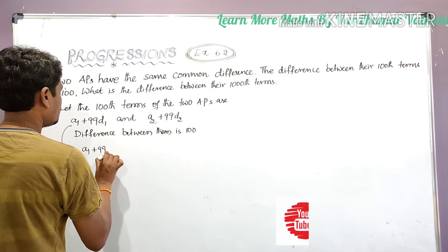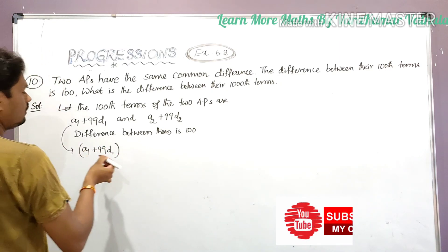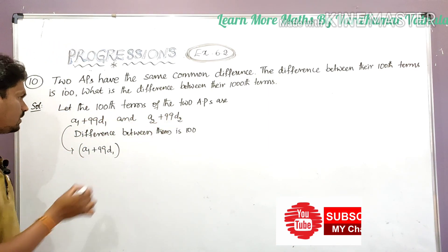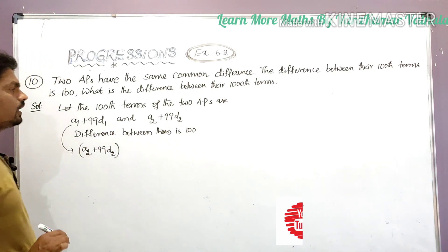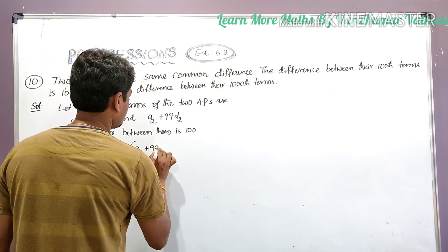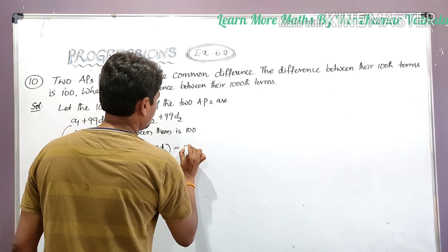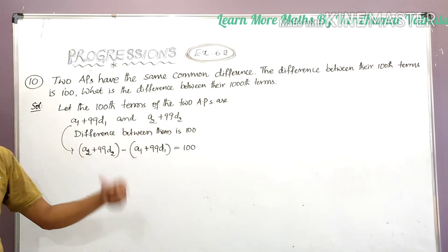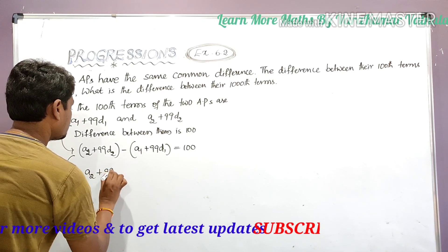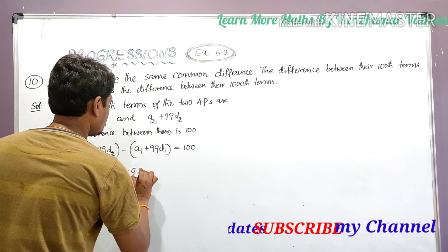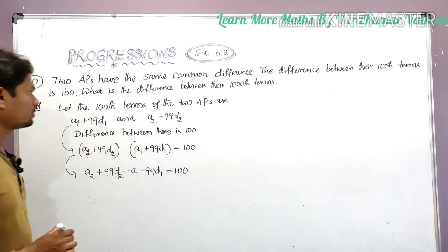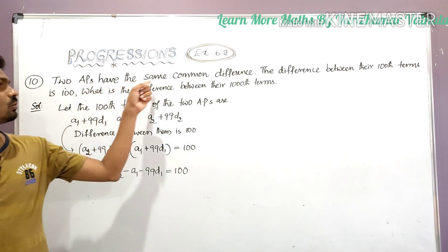So the difference between them is: (a2 + 99d2) minus (a1 + 99d1) equals 100. Expanding, we write: a2 plus 99d2 minus a1 minus 99d1 equals 100.